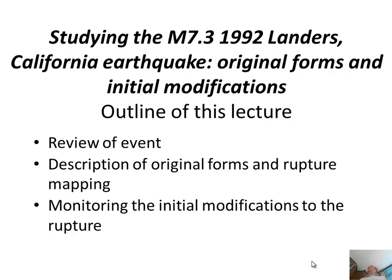The 1992 Landers earthquake in California was magnitude 7.3, and we are interested in the original form of the fault scarp. What did the fault scarp look like immediately after the earthquake, and then how did it change — the initial changes caused by erosion and also by people walking over them. I'll review the events, describe the original forms, show a little bit of the rupture mapping, and then describe our monitoring of the evolving system over more than 20 years since the earthquake.